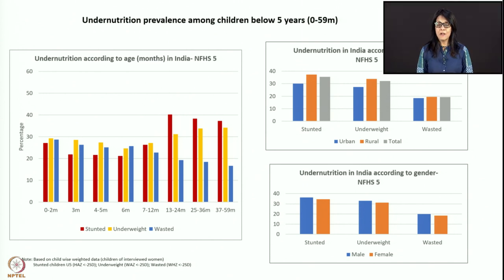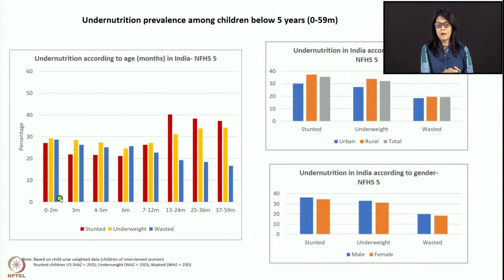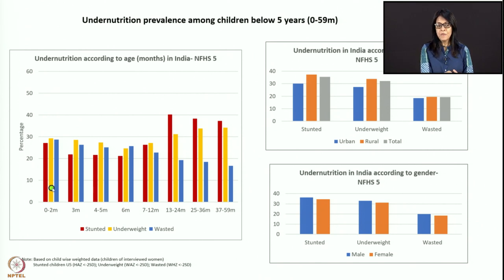This is NFHS-5 data — National Family Health Survey. In the first slide, what you are seeing is the age-wise distribution of nutrition indicators. We have distributed whatever data NFHS-5 had among different age groups: 0 to 2 months, 3 months, 4 to 5 months, 6 months, with percentage on the Y-axis. We have taken three indicators: blue is wasting, yellow bar is underweight, and red is stunting.